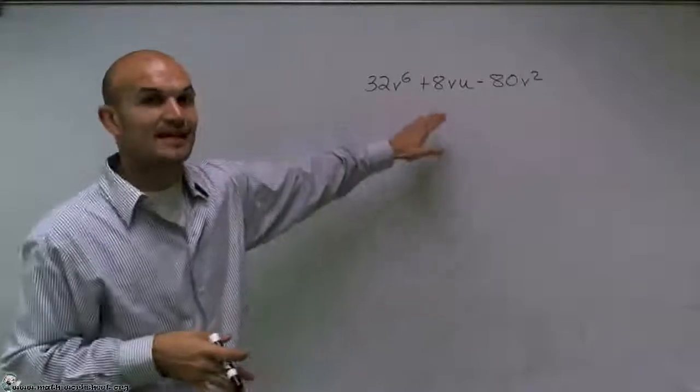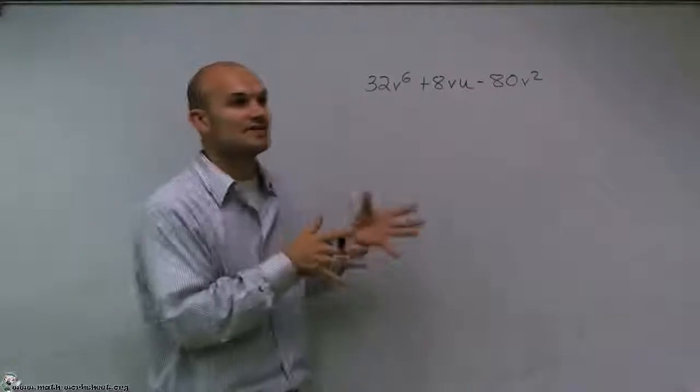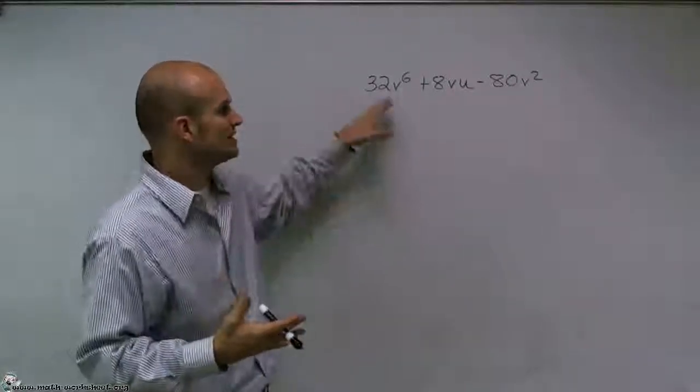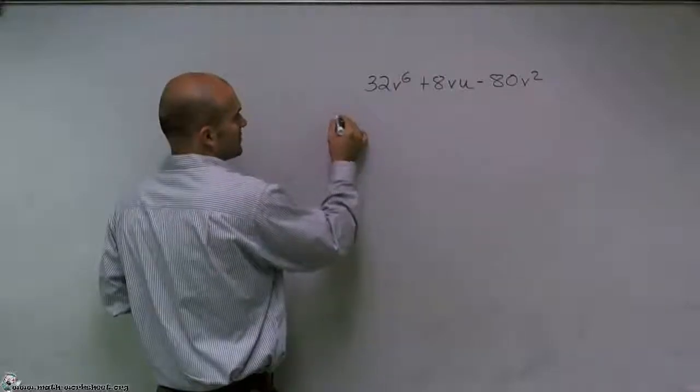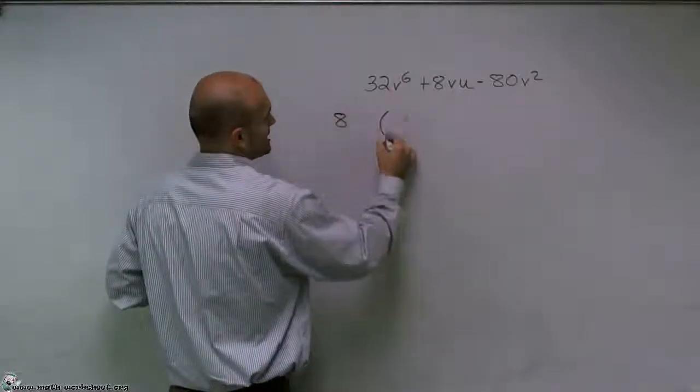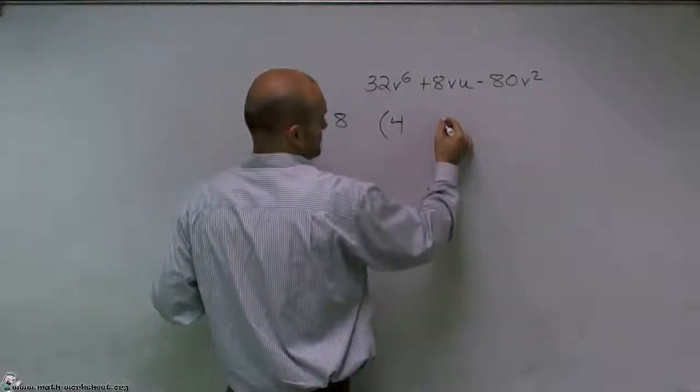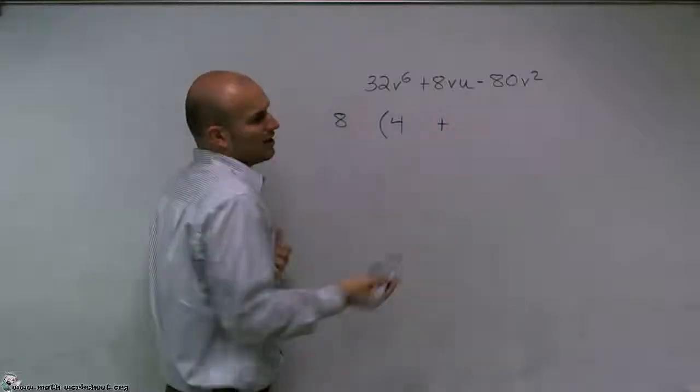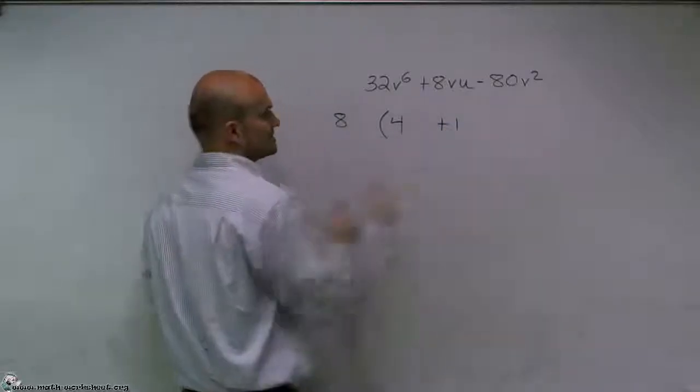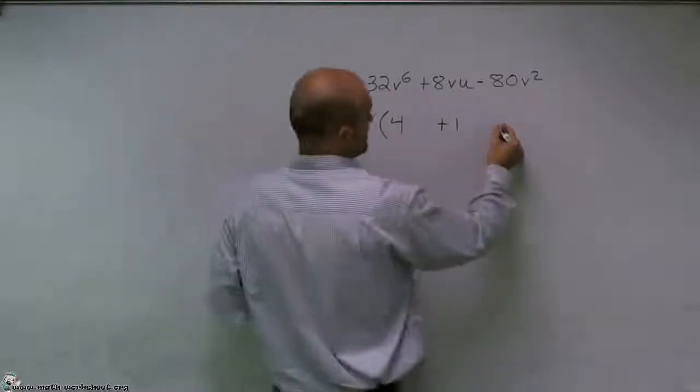So what I can do is, eight is going to be my greatest common factor. And what we're going to do is we're going to factor that out. We're going to divide our eight out of our three terms. So I'll write this eight out here. 32 divided by eight is going to give me a four. Eight divided out of eight is just going to leave me with a one. And then negative 80, when I factor out an eight, is going to leave me with a negative 10.